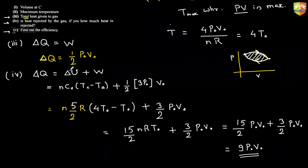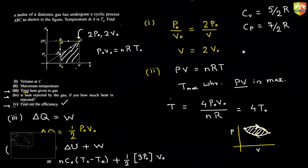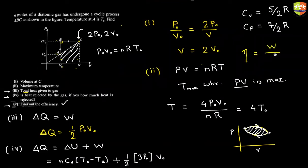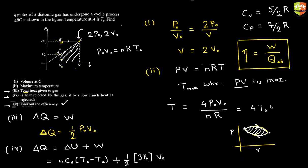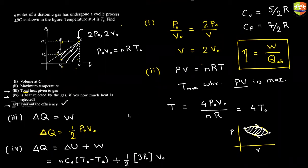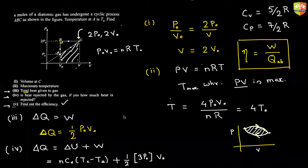For the fifth part, find the efficiency of the cycle. The formula is efficiency = work done divided by heat absorbed. We've found heat released. A student suggests 1/19 × 100 — you need to multiply by 100 for percentage. That fraction is correct.